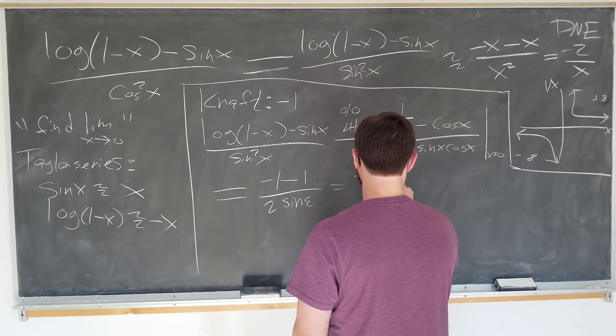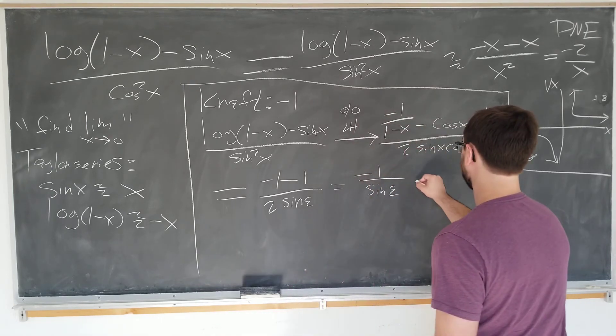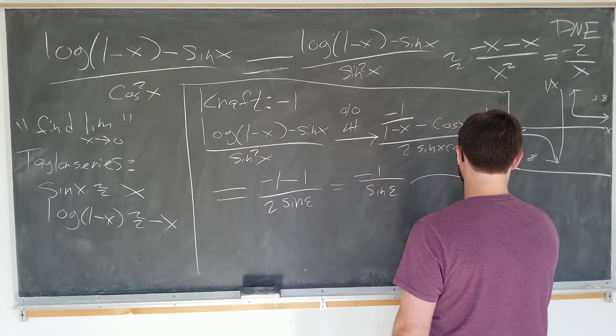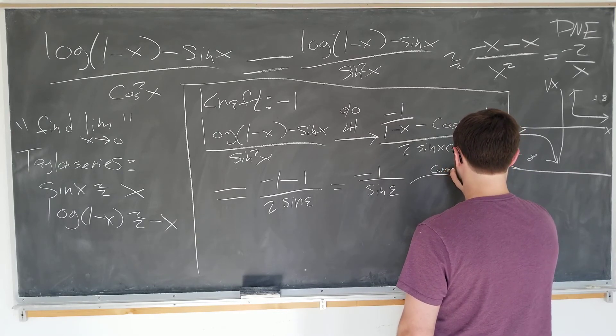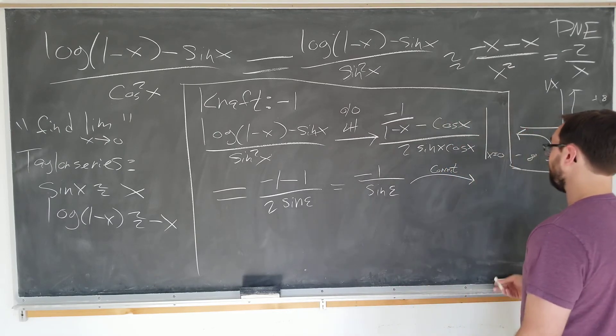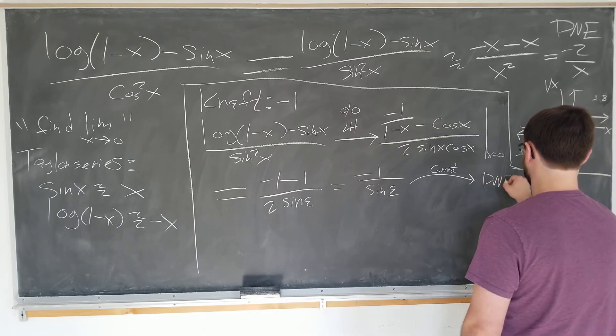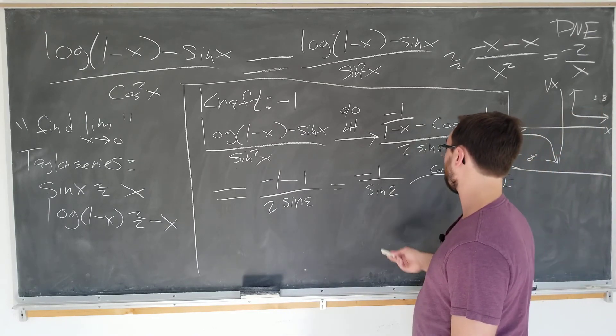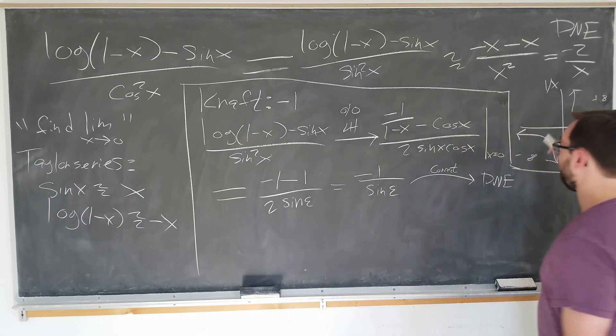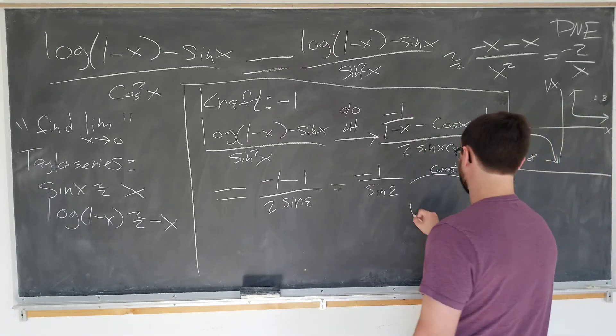So the correct response, as before, it doesn't exist, since sine of 0 is indeed 0, and we have the same situation here. But what Kraft, it seems to believe, she takes sine 0 is equal to 1, and then she obtains the limit is negative 1, which is wrong.